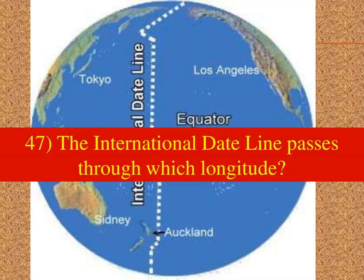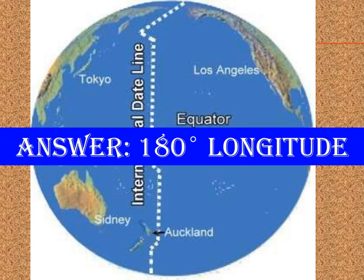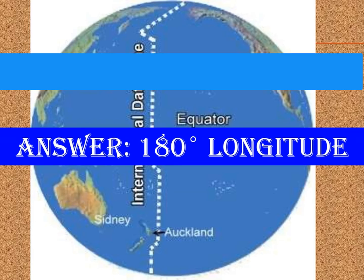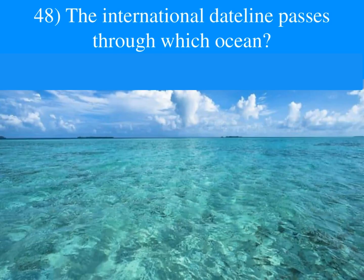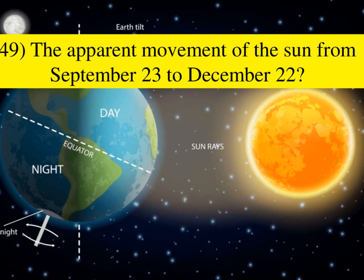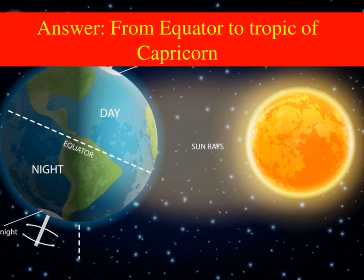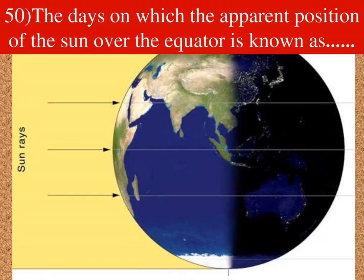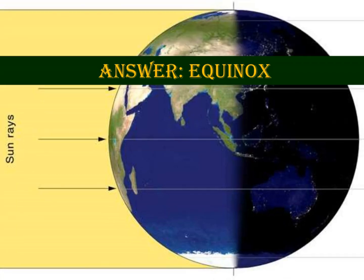The international dateline passes through which longitude? Answer: 180-degree longitude. The international dateline passes through which ocean? Answer: Pacific Ocean. The apparent movement of the Sun from September 23rd to December 22nd is from the Equator to the Tropic of Capricorn. The day on which the apparent position of the Sun is over the equator is known as Equinox.